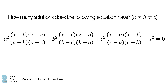The first three terms have a similar form. The first term is a squared multiplied by the fraction x minus b multiplied by x minus c, all over a minus b multiplied by a minus c. Then we add the second term, which is b squared multiplied by x minus c multiplied by x minus a, all over b minus c multiplied by b minus a.